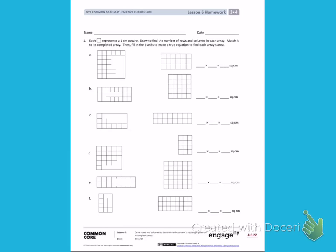Number 1. Each square represents a 1 cm square. Draw to find the number of rows and columns in each array. Match it to its completed array. Then, fill in the blanks to make a true equation to find each array's area.